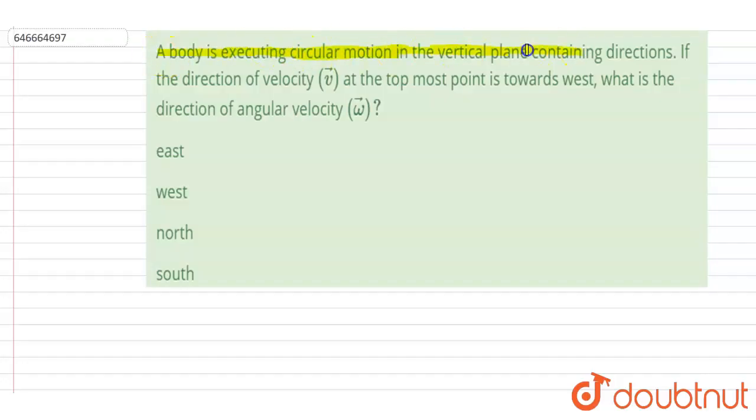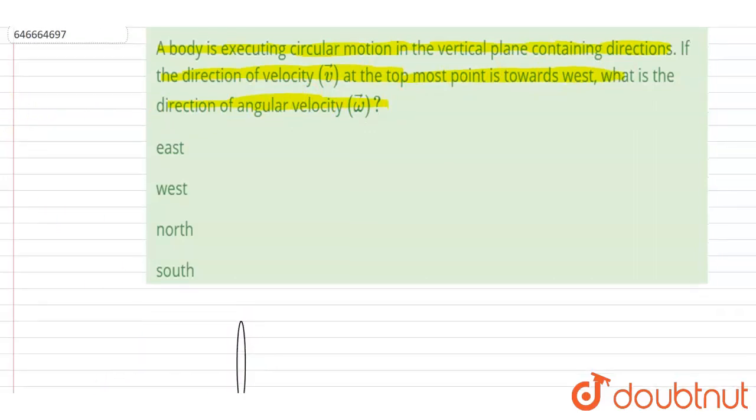If the direction of velocity vector at the topmost point is toward west, what is the direction of angular velocity? So if you see, if I draw the vertical plane of the circular motion, the particle is having the velocity direction.